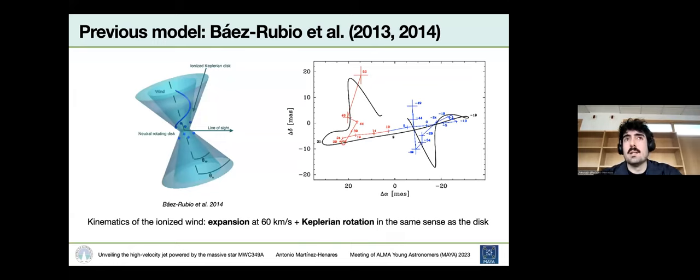How did the previous model do with the Plateau de Bure observations? We have a system which is made of a neutral rotating disk, which is not shown here. But then there is an ionized layer of this neutral disk, which we call the ionized Keplerian disk. This is ionized because of the emission of the central star. From this disk, we have photoevaporation. This leads to an ionized wind, which is expanding radially at 60 kilometers per second and rotating in a Keplerian law along with a disk. This worked very fine to reproduce the Plateau de Bure observations.